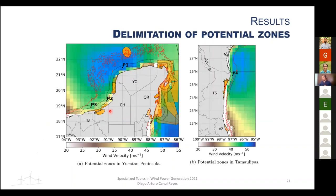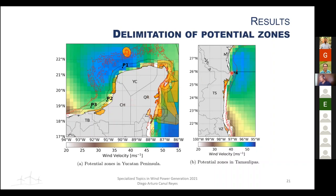Superimposing the geographical restrictions with the capacity factor restriction using ERA5 (chosen for its higher resolution) allows more specific zones to be identified within the three previous areas. Four specific points are selected: Point 1 in Yucatan, Point 2 in Campeche, Point 3 in Campeche, and Point 4 in eastern Tamaulipas. The Tamaulipas area (Point 4) is notably smaller compared to the large Yucatan area.